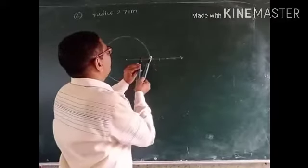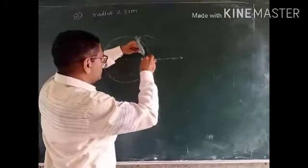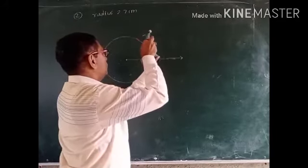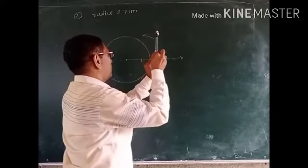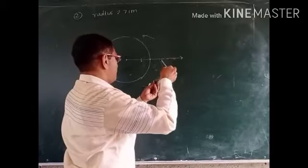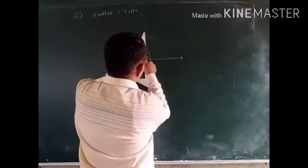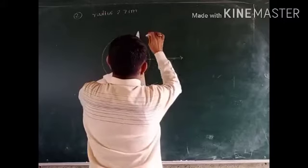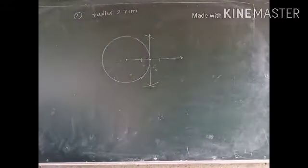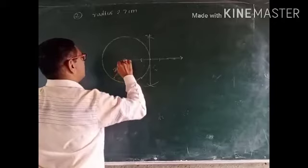We got two different points. I will place the steel tip on one point and draw an arc, then draw the end arc on the other side. Now I will join these points, and this is the tangent drawn to the circle. I will also draw the radius and write 2.7 centimeters.